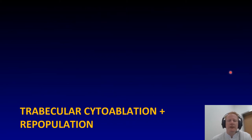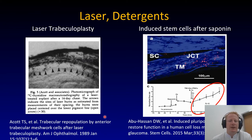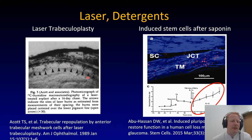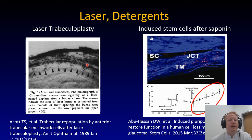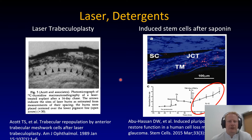Trabecular cytoablation and repopulation. This is also something that's been done for quite some time. This is a very interesting study by Ted Acott from 1989. You see a human anterior segment upside down — here's the cornea, here's Schwalbe's line with the hypothetical insert zone where stem cells live. The laser was applied to the pigmented line, and you can see cells migrating, suggesting that something migrates down to repair the damage and restore function, lowering pressure.